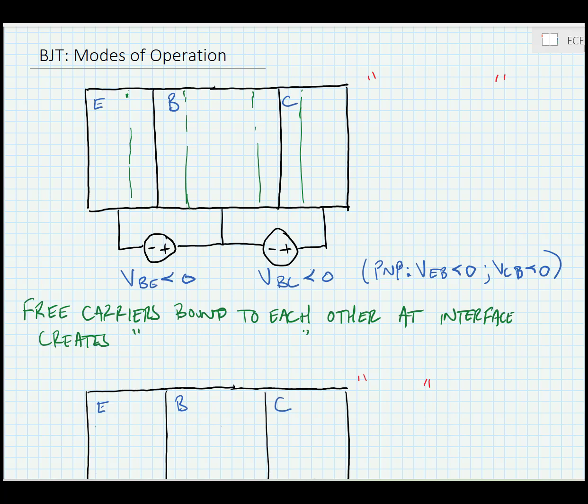If we were looking at a PNP, the conditions would be that the emitter-to-base voltage is less than 0 and the collector-to-base voltage is less than 0. In other words, if we just reverse the subscripts when we're talking about the PNP, the operation is the same as it is for the NPN.